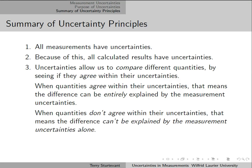When quantities don't agree within their uncertainties, that means the difference can't be explained by the measurement uncertainties alone. In that case, we calculate the percent difference between the two values.